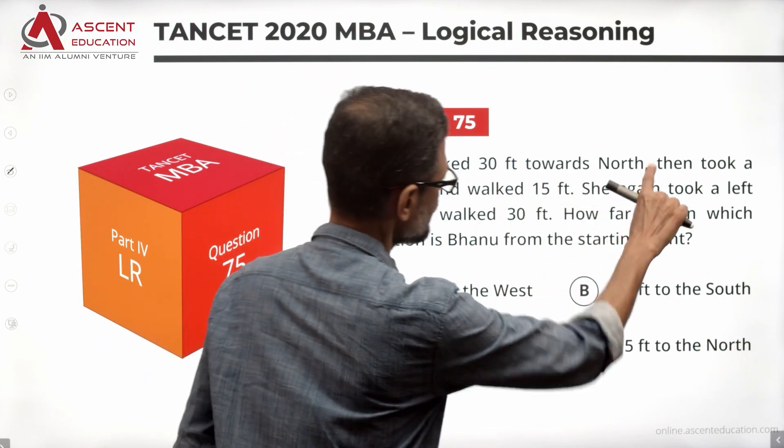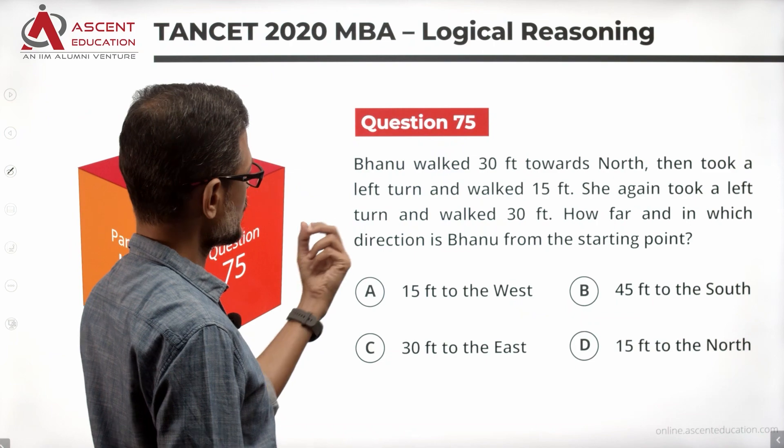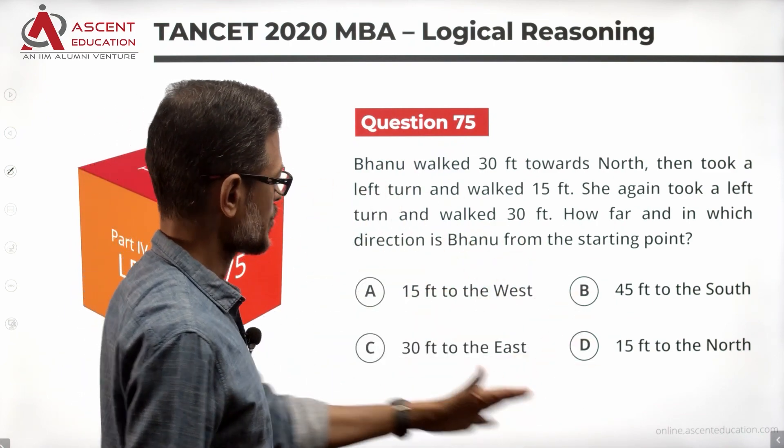Banu walked 30 feet towards north, then took a left turn and walked 15 feet. She again took a left turn and walked 30 feet. How far and in which direction is Banu from the starting point? Now answer options.